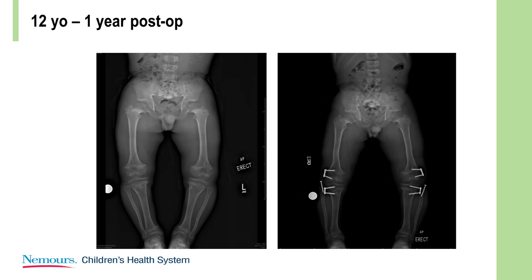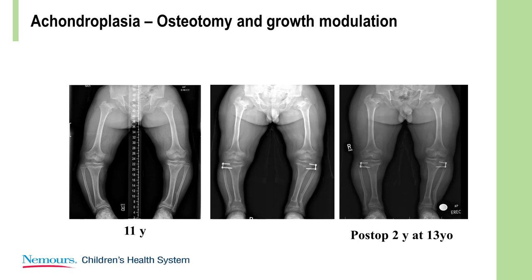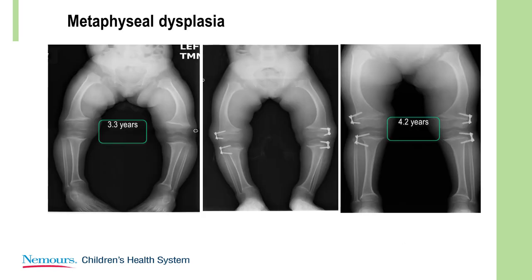I think growth modulation is very effective, and I have to start changing the way I use this tool. Here's an 11-year-old boy with significant distal tibial varus but not much upper tibial varus, so I used a combination of techniques: growth modulation to improve the varus proximally, and realignment osteotomies distally. In metaphyseal dysplasia it is a very powerful tool in these kids, and you'll see some examples from Dr. Stevens in a moment. There's excellent realignment opportunity in these children.